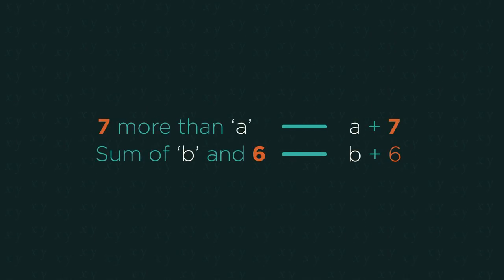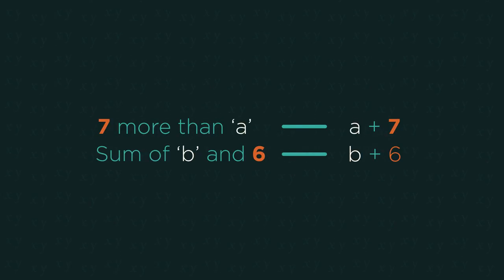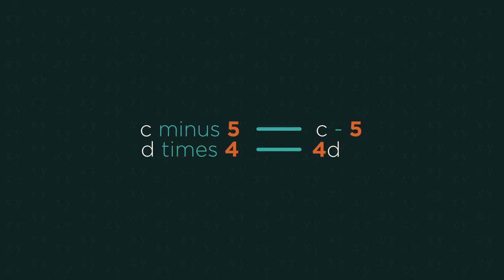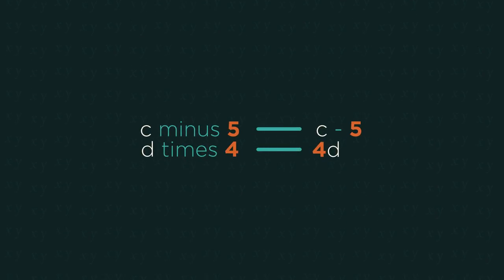In this video, we're going to look at how to derive equations and expressions from sentences. We can write C-5 in symbols rather than words, and the same for D times 4.